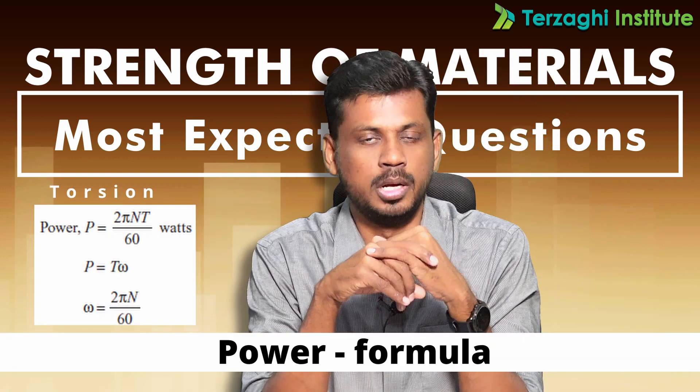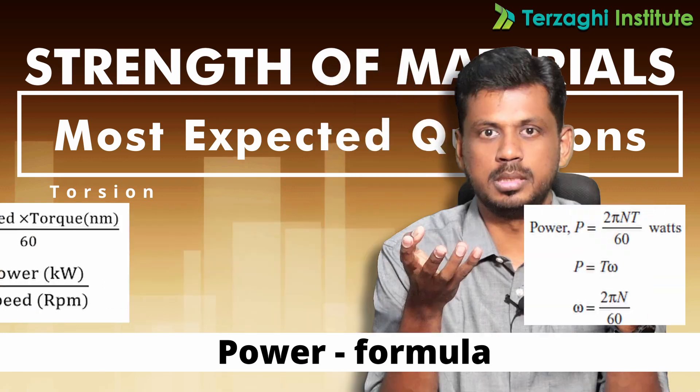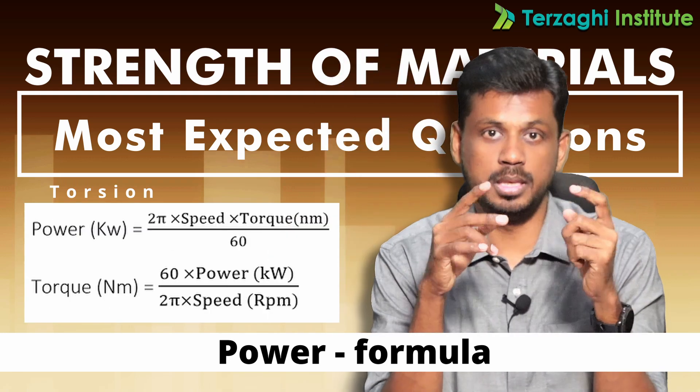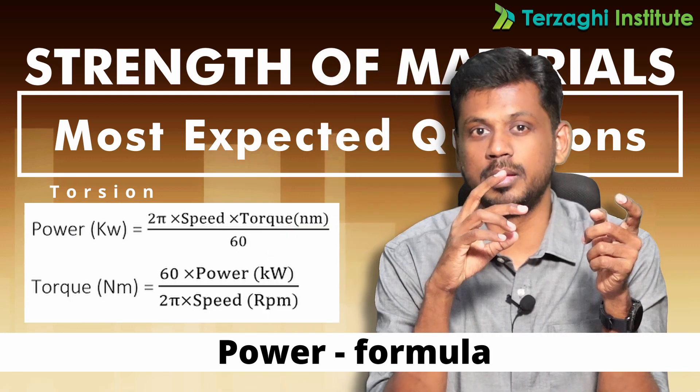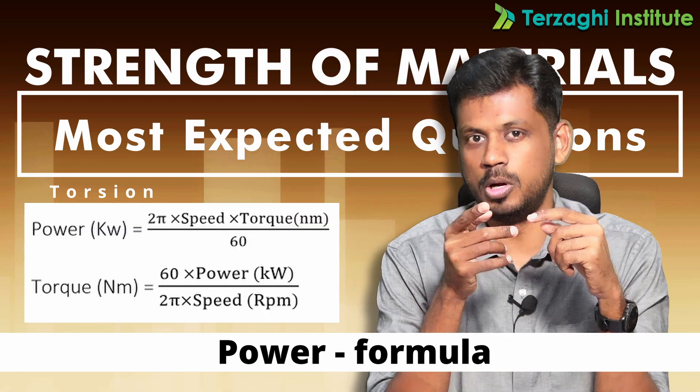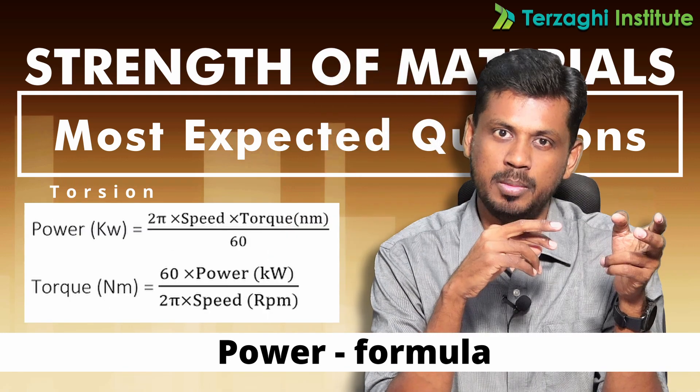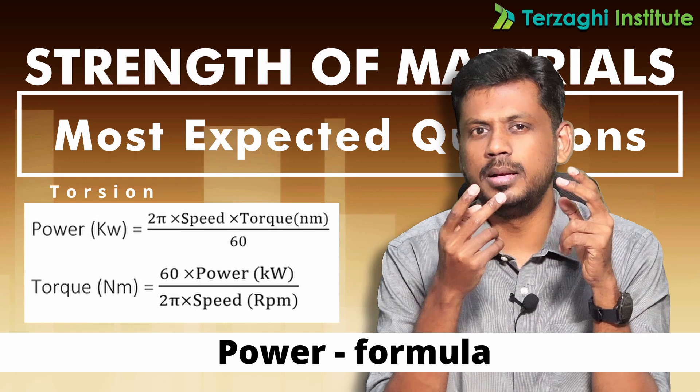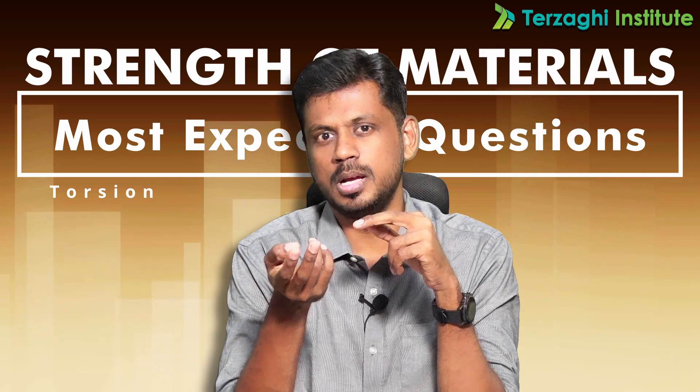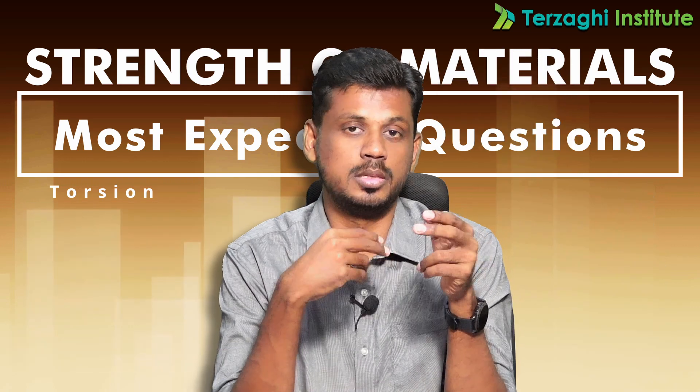Torsion. Power formula: 2πNT by 60 — that is kilowatts, watts, rpm — directed by angular acceleration.